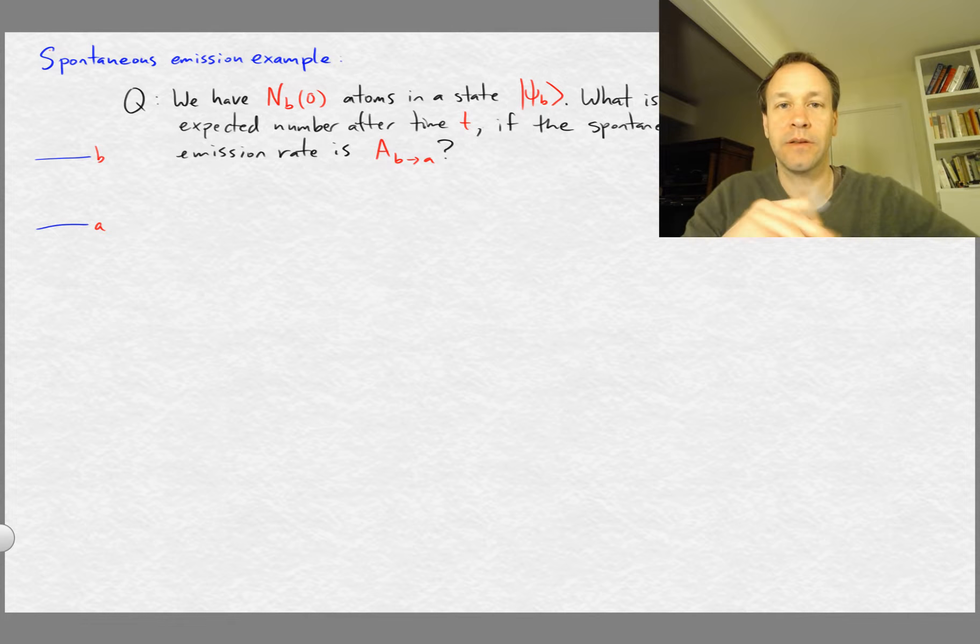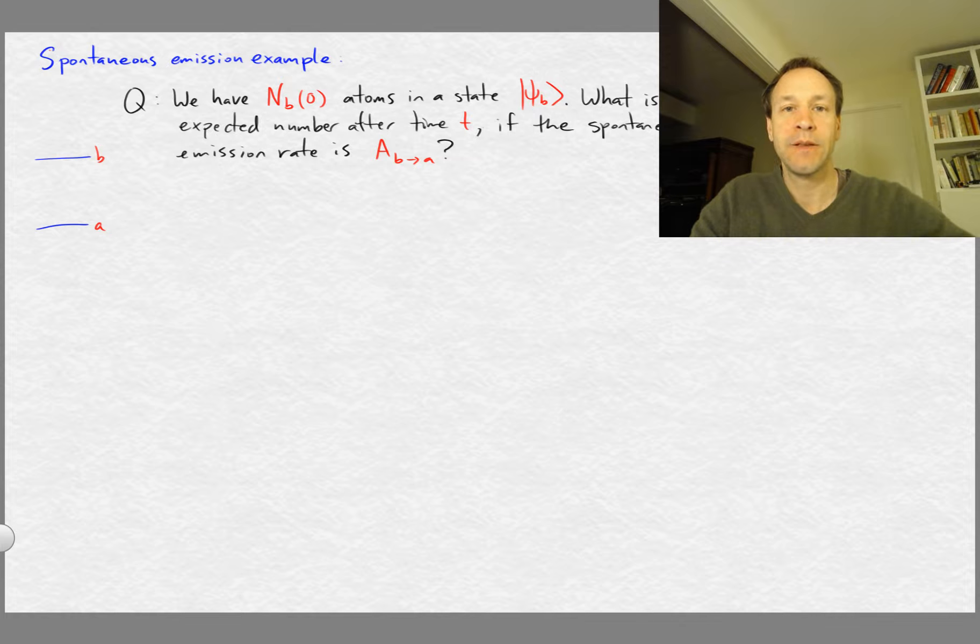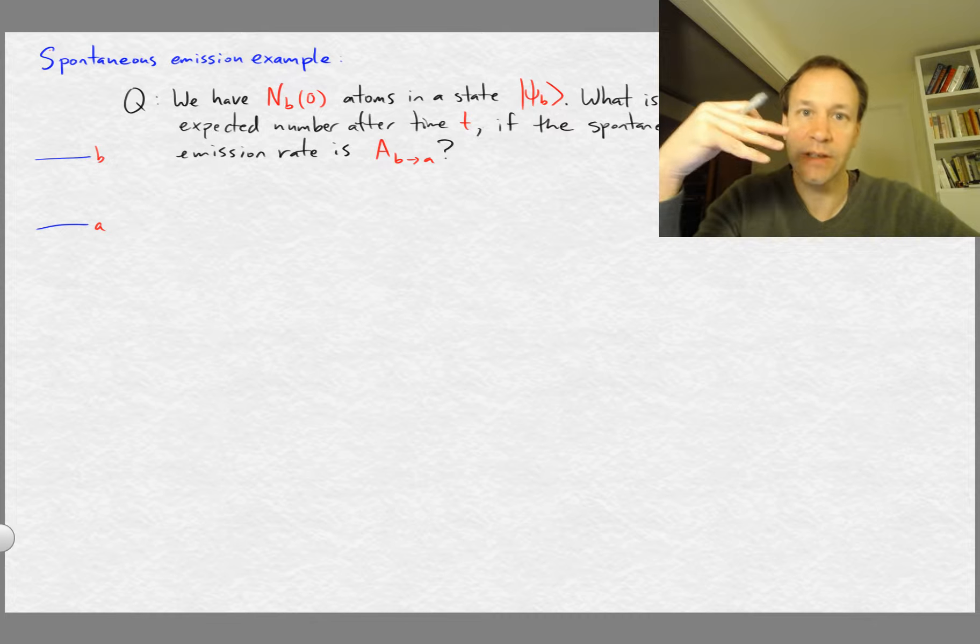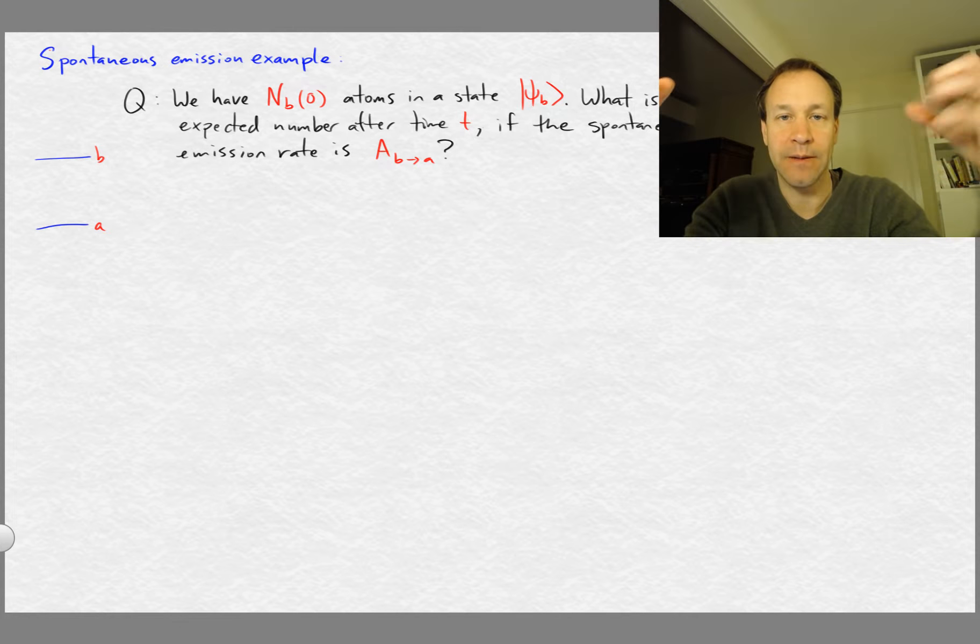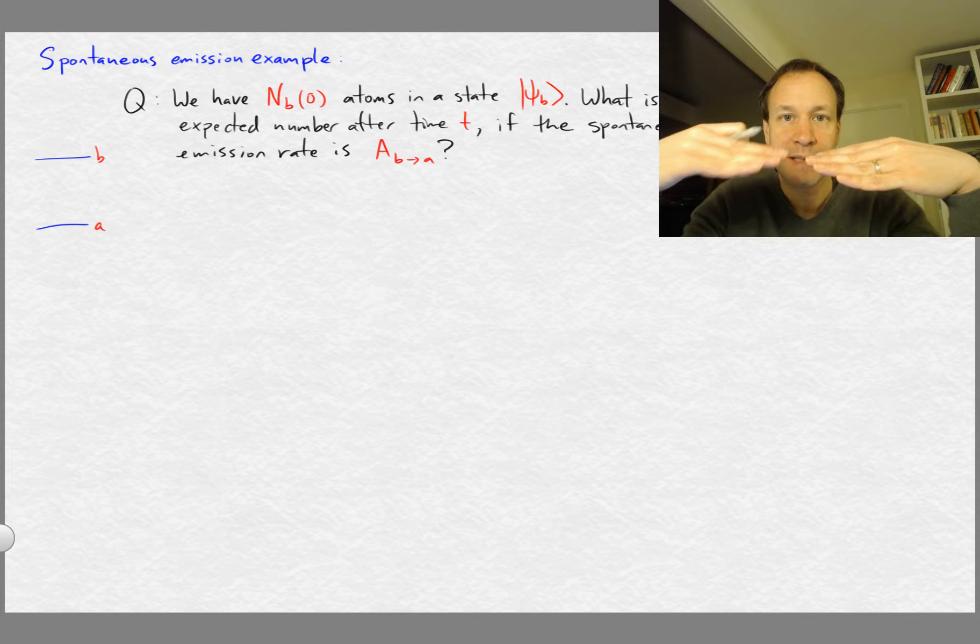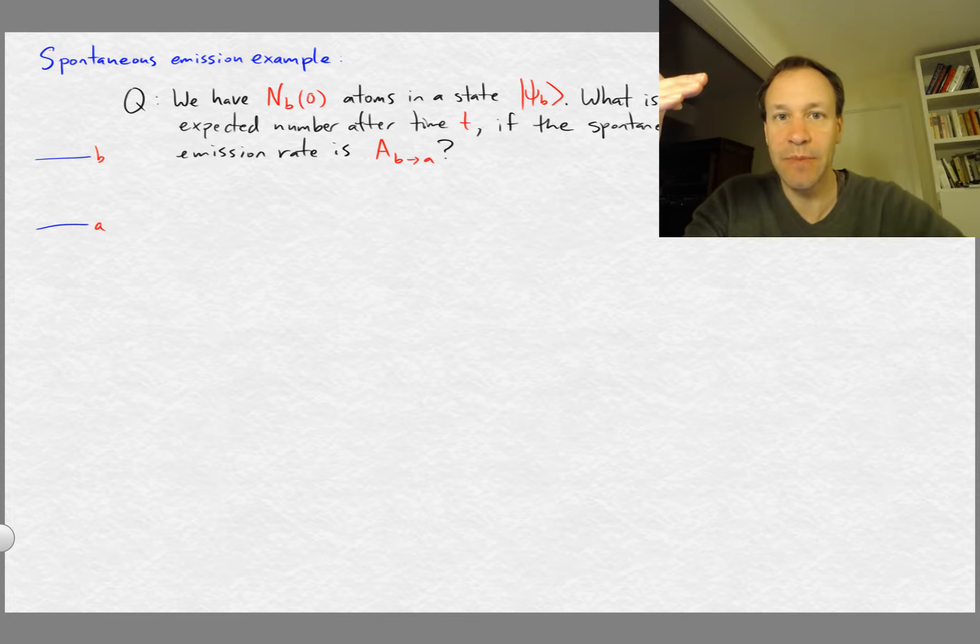Okay, so I want to do a little example using spontaneous emission. I want to imagine a system where we have an atom and we have initially some number n_b of those atoms.